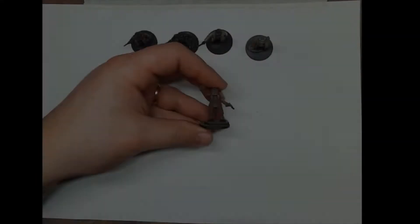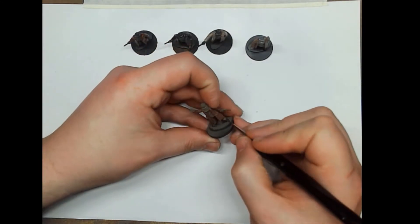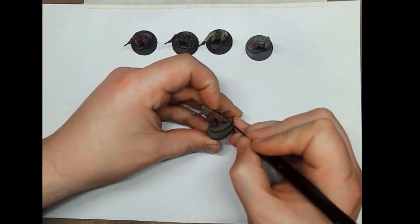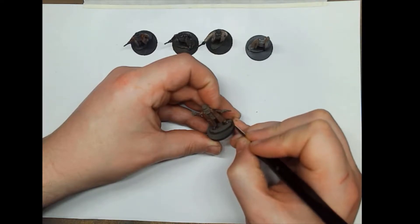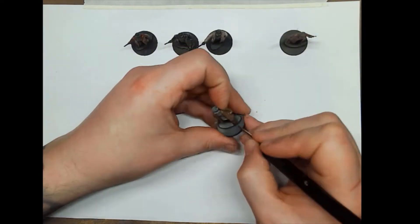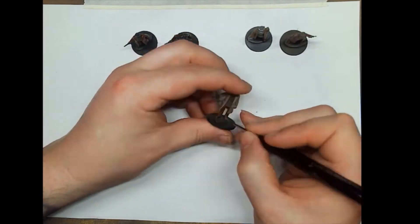So that's all our base coats down. Now we can start highlighting. So on the boots where we started off with the Dryad Bark, I'm now going to highlight up with Steel Legion Drab. You don't need to be too neat and tidy with this because by the end of this tutorial you'll be weathering over the top of it anyway.